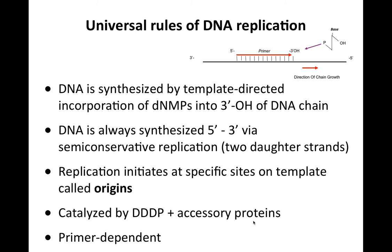The last universal rule of DNA replication is that it is primer-dependent — a primer is always needed. In the illustration, you can see DNA being synthesized on a template; the primer is shown in red. You always need a primer of some sort to hybridize with the template and provide an anchor for the DNA polymerase to start synthesizing bases. The polymerase will not work without a primer — very different from RNA polymerases, some of which don't need a primer.